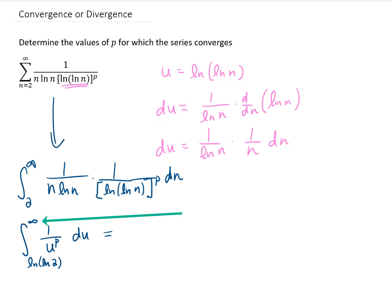At this point we do need to integrate. It might help you out if you rewrite this integral a little bit. 1 over u to the p power can be written as u to the negative p. And now we can use our power rule for integration which says we're going to raise the power on u by 1 and divide by that power.